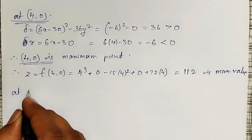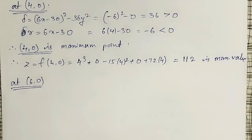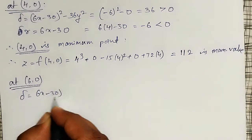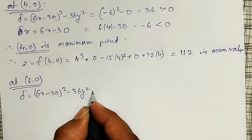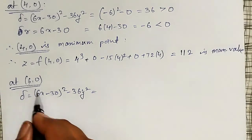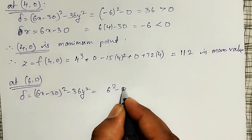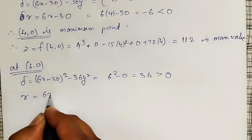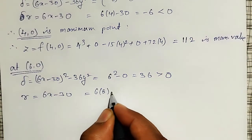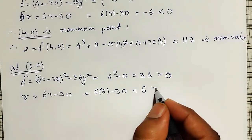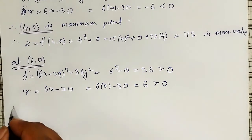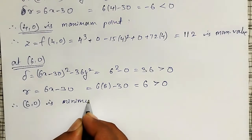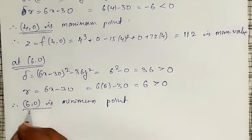At the second critical point (6, 0): delta = (6(6) - 30)² - 36(0²) = (36 - 30)² = 6² = 36, which is greater than 0. And r = 6(6) - 30 = 36 - 30 = +6, which is greater than 0. Therefore, according to the conditions, (6, 0) is a minimum point.